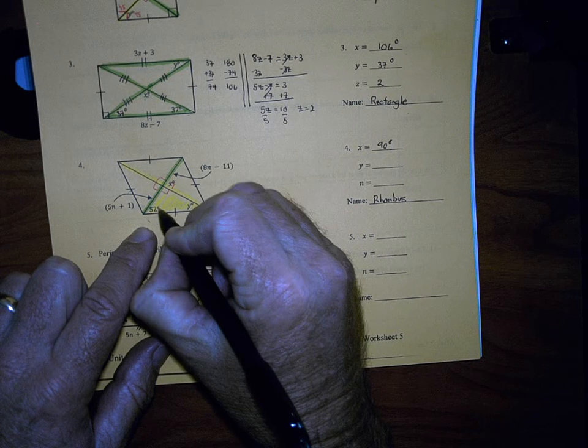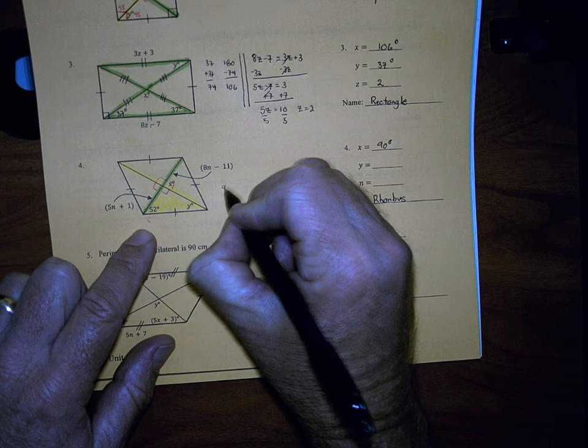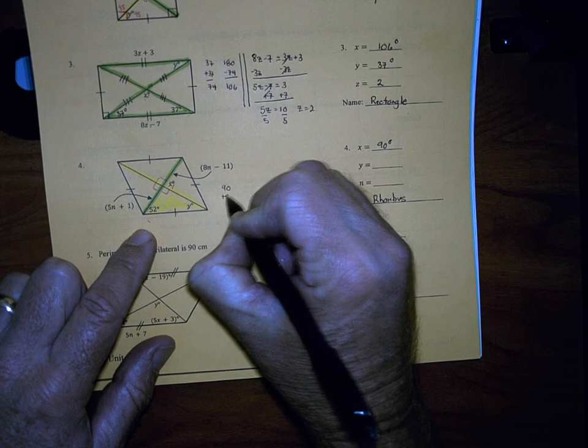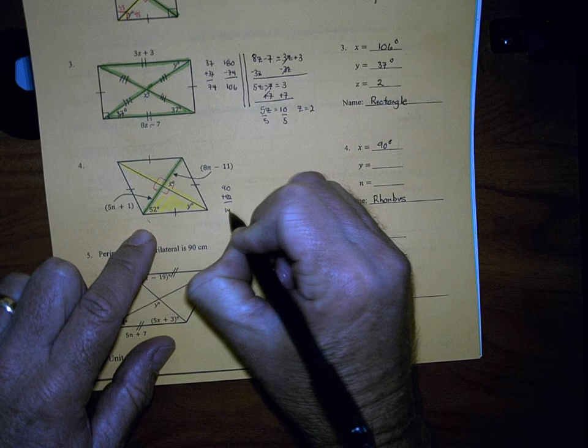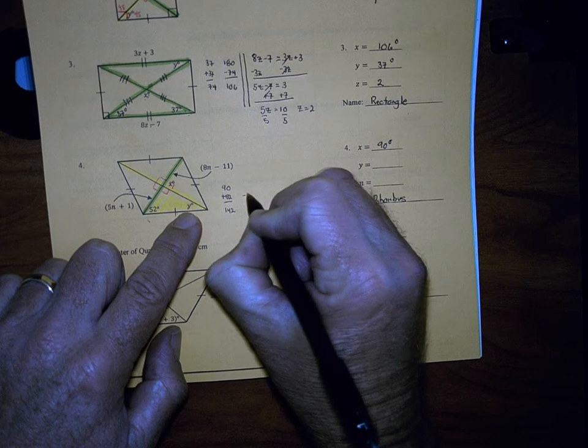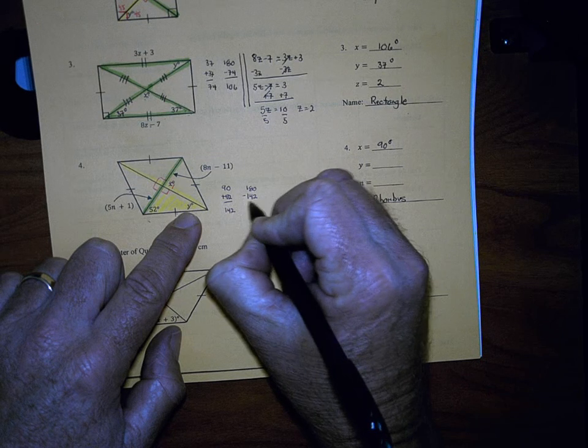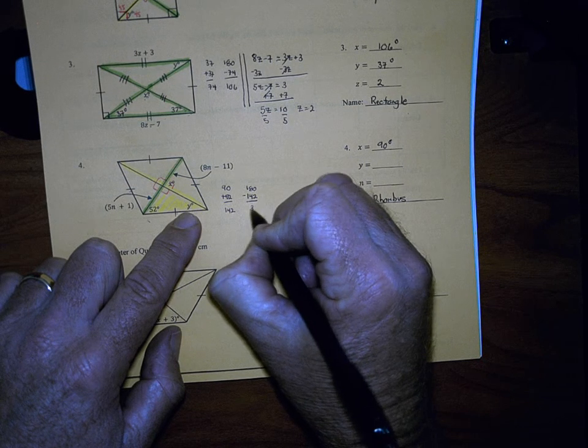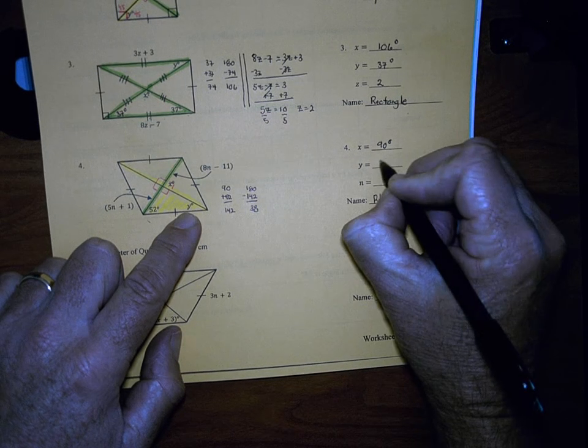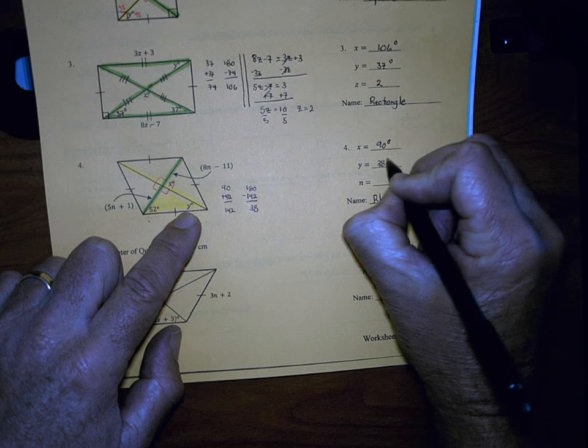What we would do is we would take the 90, we would add it to the 52. That is 142. And then to find Y, we would take away 142 from 180, because the three interior angles add up to 180. So Y would be 38 degrees.